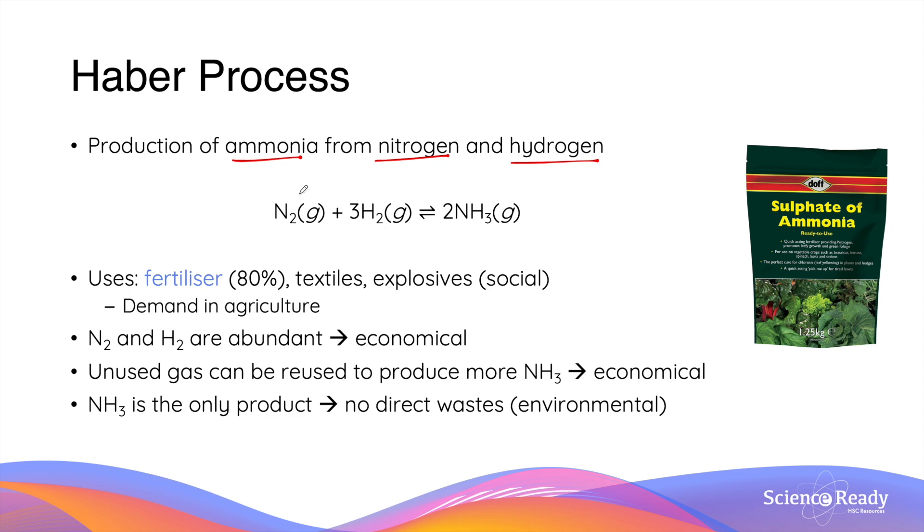The Haber process is very relevant to our discussion because ammonia is an essential ingredient of fertilizers which makes up 80% of its usage globally. Although it is also used in textiles and various forms of explosives, the reason why it is still commonly produced using the Haber process is due to its high demand in agriculture.